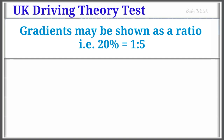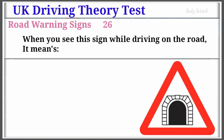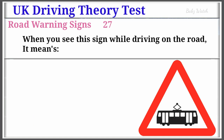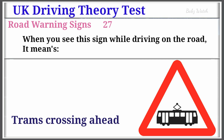UK Driving Theory Test Road Warning Sign Number 26: When you see this sign while driving on the road, it means Tunnel Ahead. Warning Sign Number 27: When you see this sign while driving on the road, it means Trams Crossing Ahead.